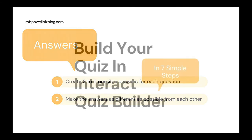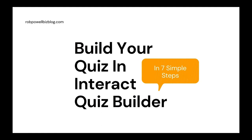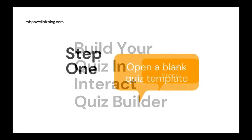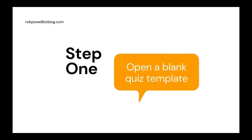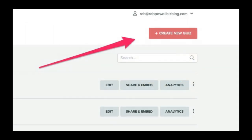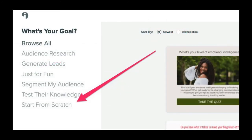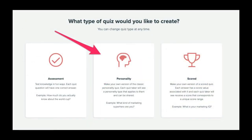Now let's go through the process of building a personality quiz in the Interact Quiz Maker. Interact has a free version that you can access through the link in the description below. Before starting, make sure you have assembled your questions, your answers, and your results. Step one: open a blank quiz template. Log in to your Interact Quiz Builder account and click Create New Quiz. On the next screen choose Start From Scratch, and on the following screen choose Personality Quiz.